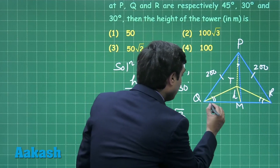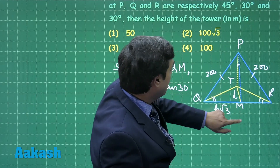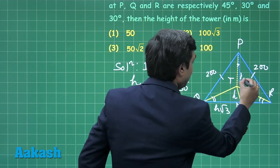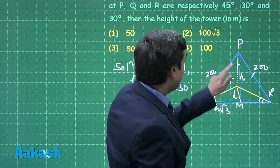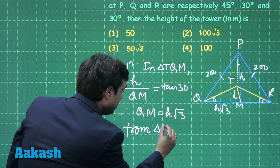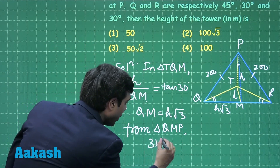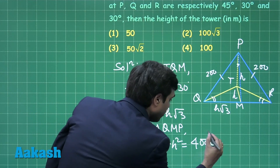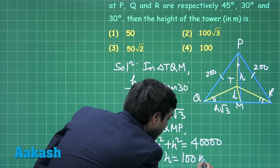We have QM equals h root 3. Since angle TPM is 45 degrees and TM equals h, PM is also equal to h. Now from triangle QMP, applying the Pythagorean theorem, we get 3h squared plus h squared equals 40000, giving us h equals 100 meters.